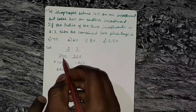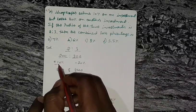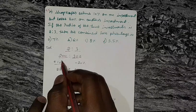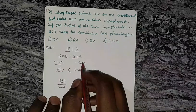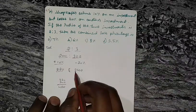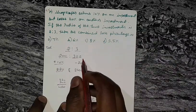In one investment he earns 10%, that is 10% of 200 is 20, so 200 plus 20 equals 220. And in another investment he loses 20%, that is 20% of 300 is 60.